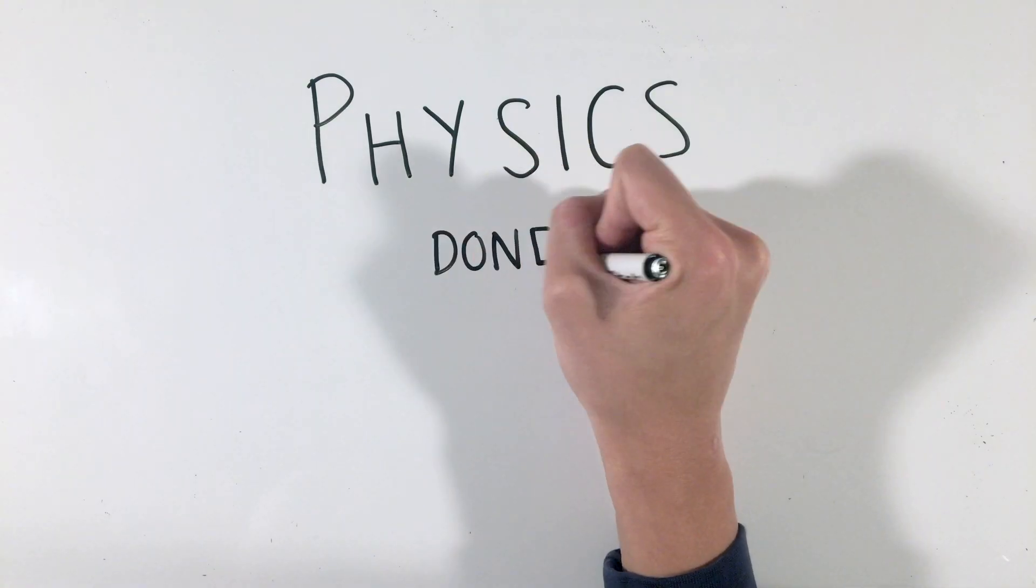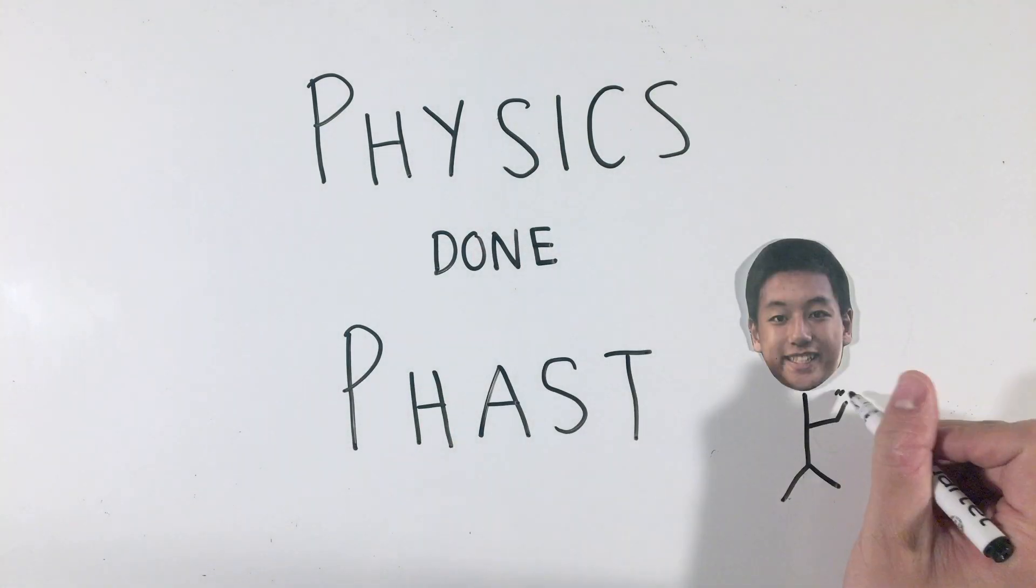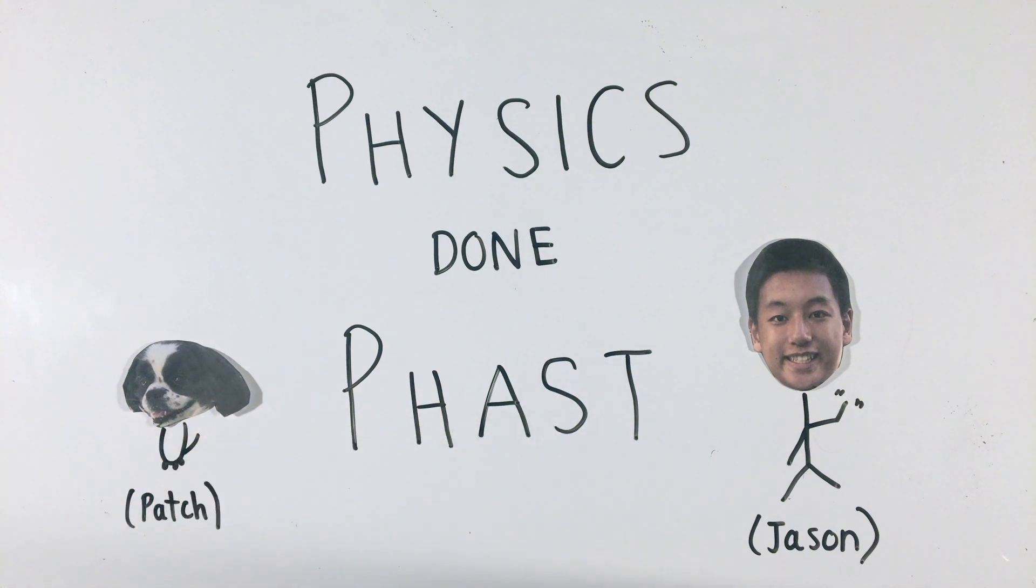While we've all heard about concepts like heat and temperature, how do we analyze these concepts and others in AP Physics 2? Thermodynamics, or the study of heat and other forms of energy, is extremely different from any other physics unit from before.